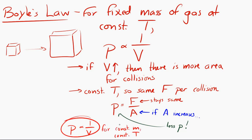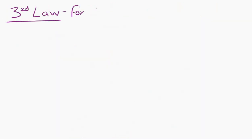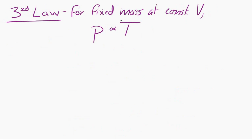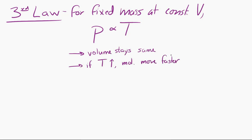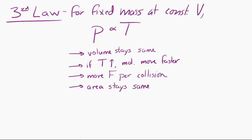The third law, also called Gay-Lussac's law, states that for a fixed mass of gas at constant volume, the pressure is proportional to the temperature. If we increase the temperature, we increase the average kinetic energy per molecule, so the molecules on average move faster. Every collision with the side applies more force. The area of the container stays the same, so increasing the force while keeping the volume the same means the pressure increases. So increase the temperature, increase the pressure: pressure is proportional to temperature.